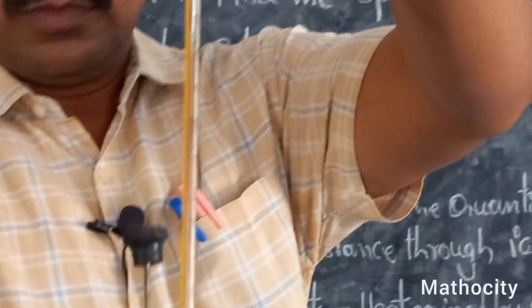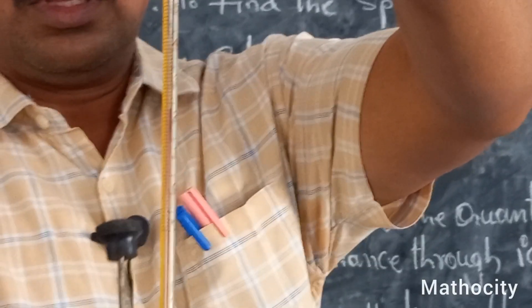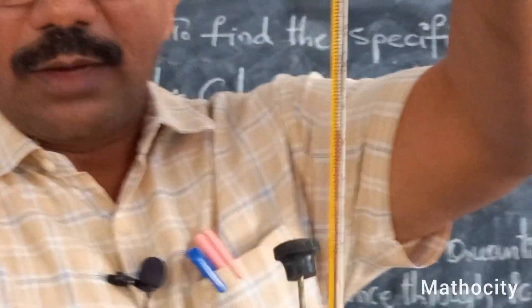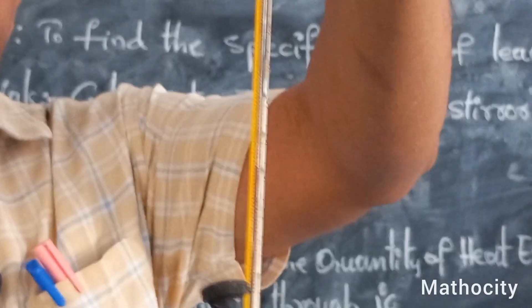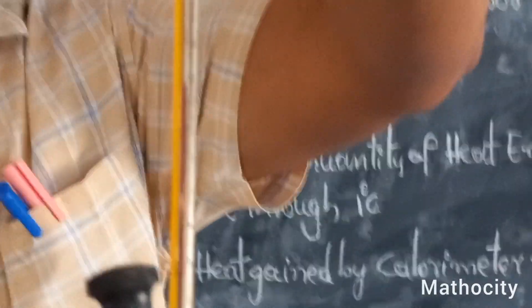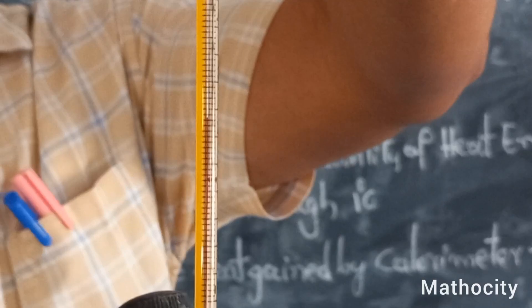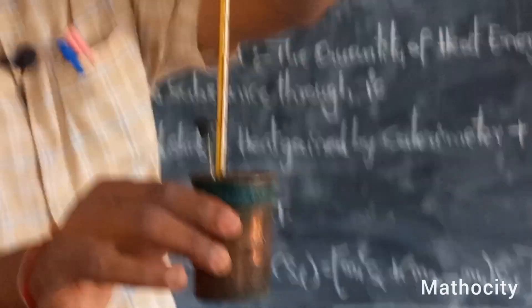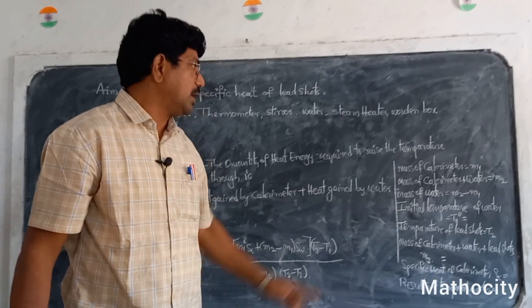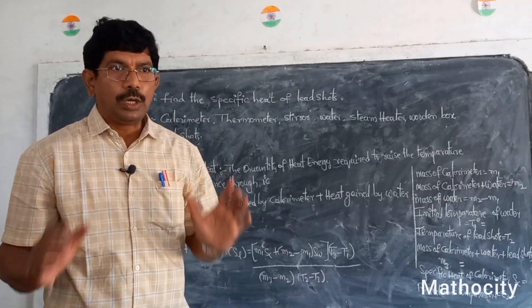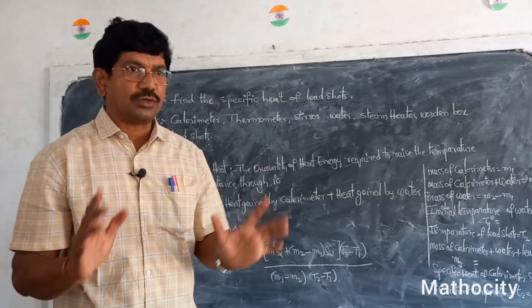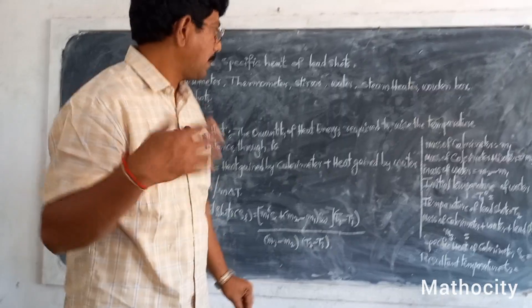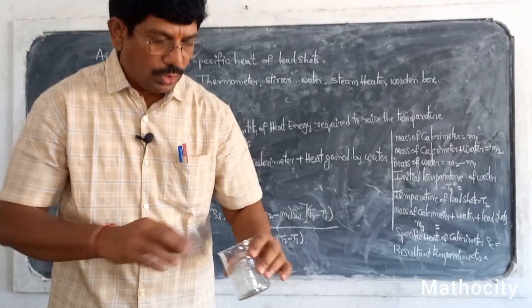Observe the thermometer reading. What is the initial temperature of the water? See the red indicator mark. The initial temperature of the water, T1, is equal to 24 degrees centigrade.